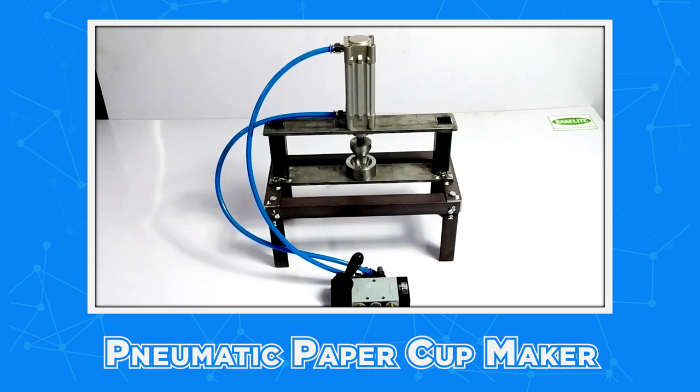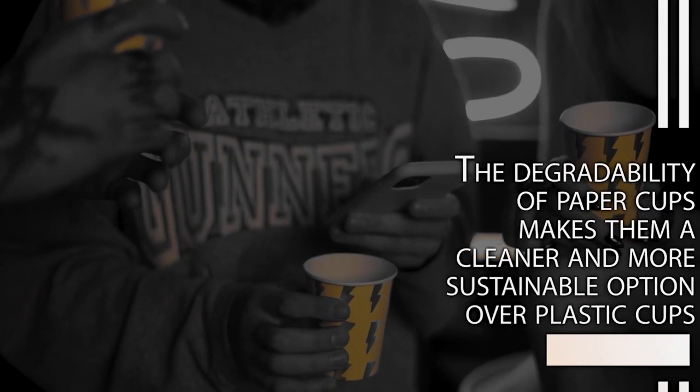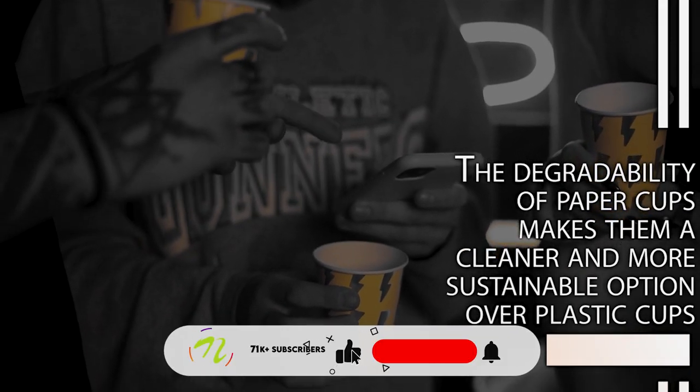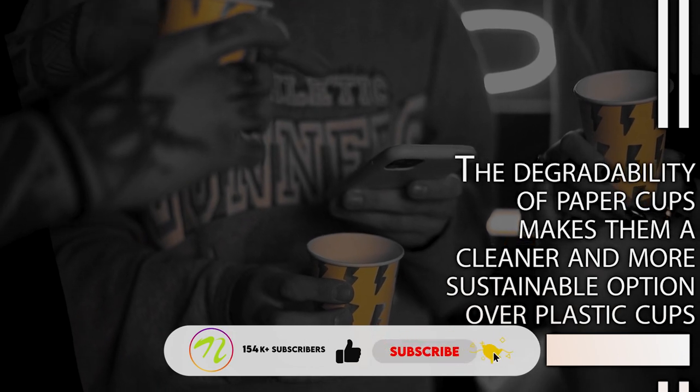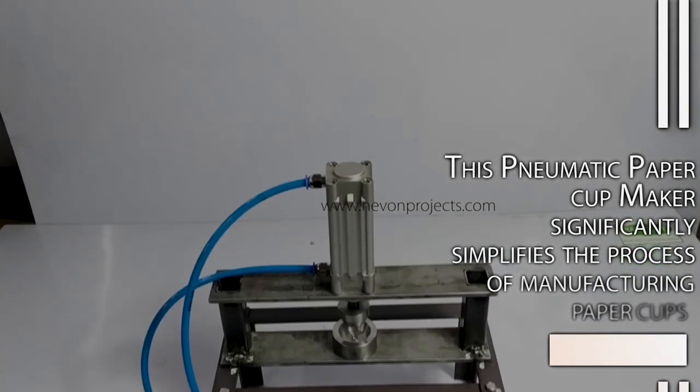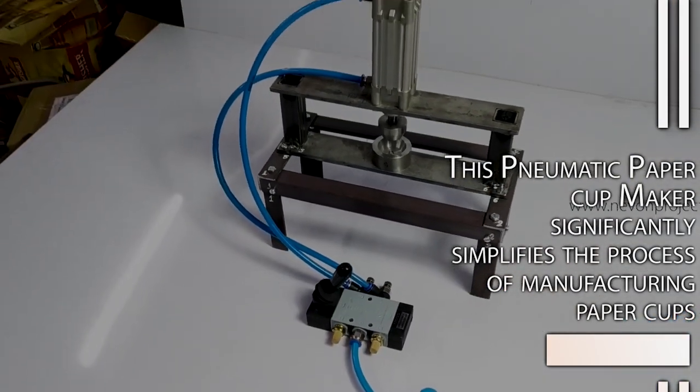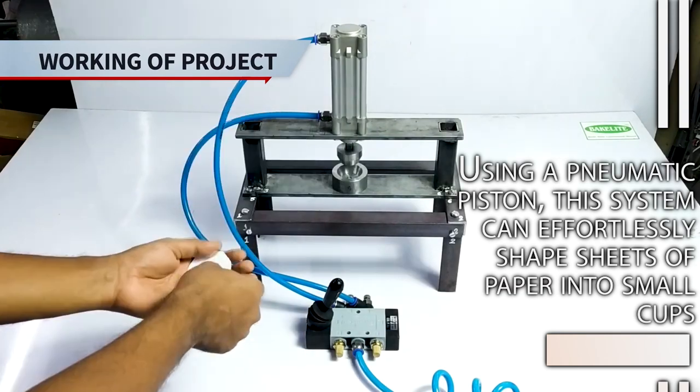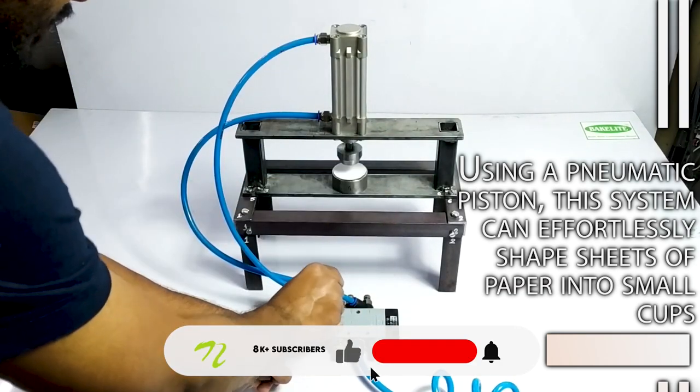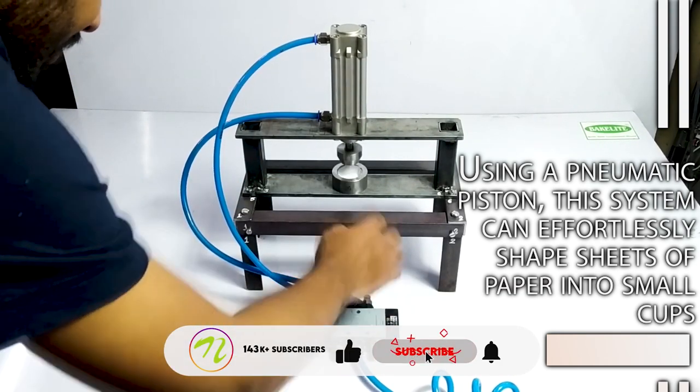Pneumatic paper cup maker. The degradability of paper cups makes them a cleaner and more sustainable option over plastic cups. This pneumatic paper cup maker significantly simplifies the process of manufacturing paper cups. Using a pneumatic piston, this system can effortlessly shape sheets of paper into small cups.